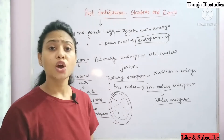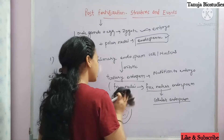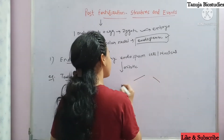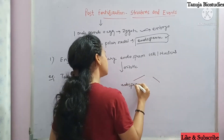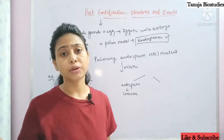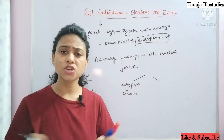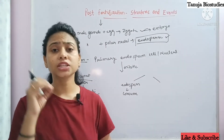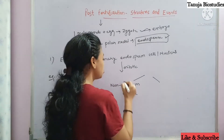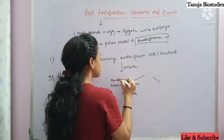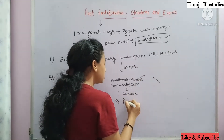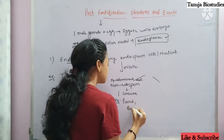The endosperm depends on the type of fruit and seed. In some seeds, the endosperm is totally consumed by the embryo during development. When the embryo consumes the entire endosperm and it is not present in the mature seed, we call it non-endospermic, or the other name is ex-albuminous seed. Examples include peanut and beans.